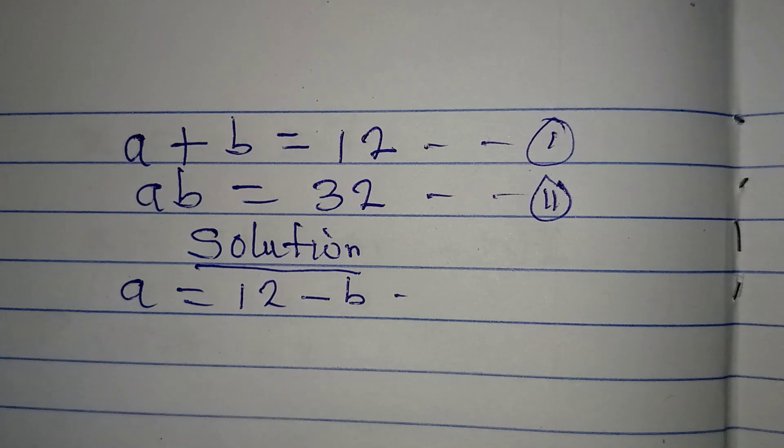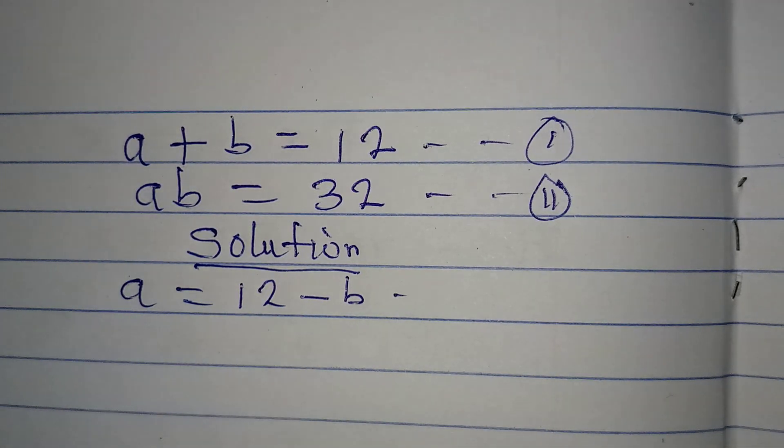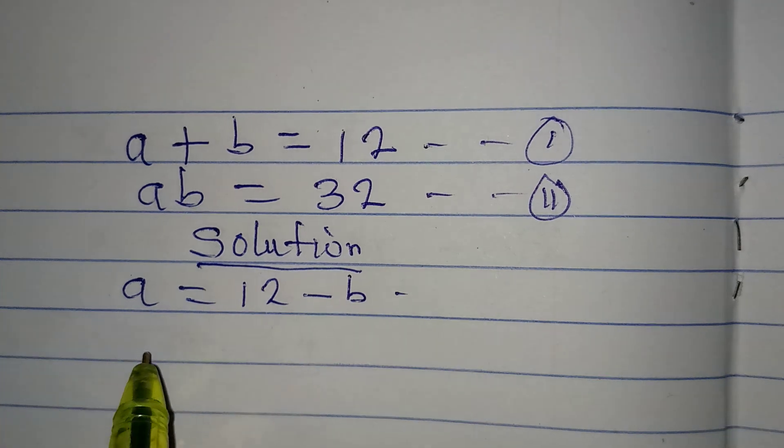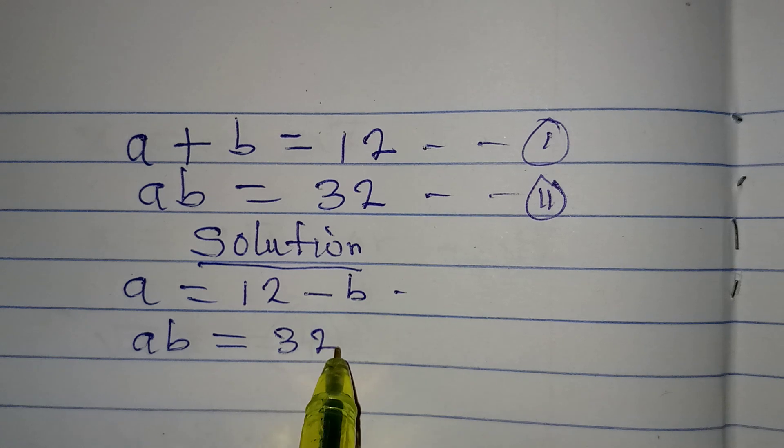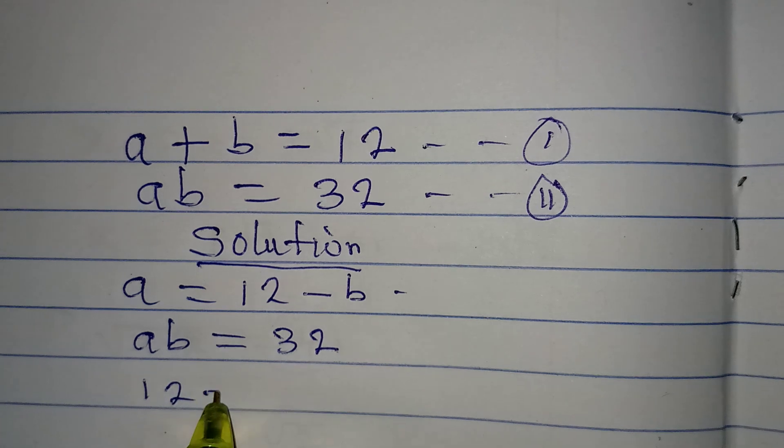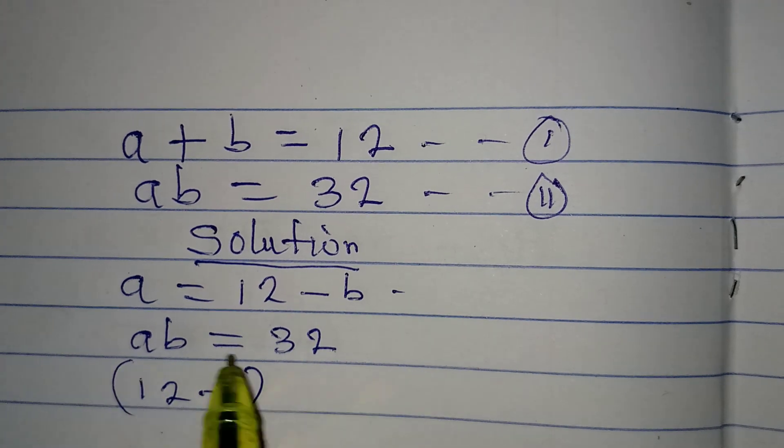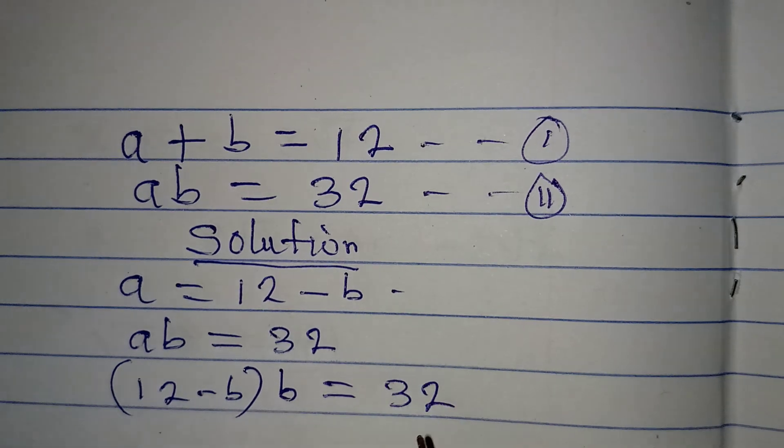Now the next thing I will do is to put this value of A into equation 2. Remember, equation 2 is AB to be equal to 32. Now our A already is 12 minus B, so this will multiply this B and it will be equal to 32.